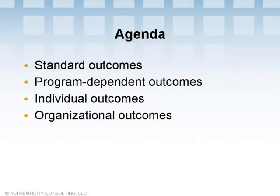If you've been following along in this series, you have a fairly good understanding of the Action Learning process, how it occurs in programs, and different perspectives on the process. You also understand that regardless of how the process is customized, it always has the same basic elements. In this presentation, we'll review the types of results or outcomes that people use Action Learning for. There are standard outcomes you'll always get, and program-dependent outcomes depending on the particular design.